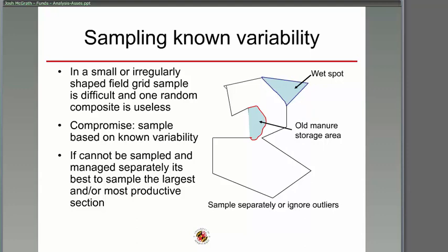You can sample the known variability but discard that area from your average field sample if you can manage it separately. For example, fields close to an old dairy barn where manure used to be spread right out the back will have a really high nutrient situation. If you include that in your overall soil sample, you'll under-fertilize the rest of the field. So if you know that area is there, disregard it. A wet spot can be the same thing — you might see very low potassium or a lot of mineralization in that area.